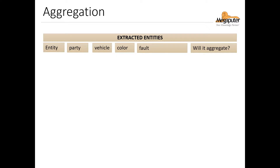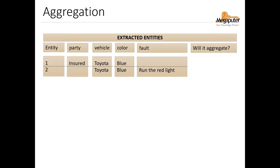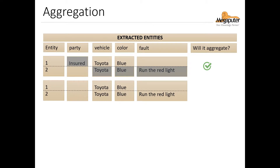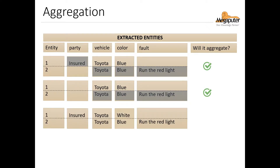Let's do a small test with some examples to see if we understand how these entities are merged and why some may not be merged to a single entity. In the first example, will it aggregate? Yes, these entities match up on vehicle and color, so they would merge successfully. In the second example, these entities also match up on vehicle and color, so this will aggregate too. In the third example, no — there is a conflict in the vehicle color listed, so these entities wouldn't merge successfully.